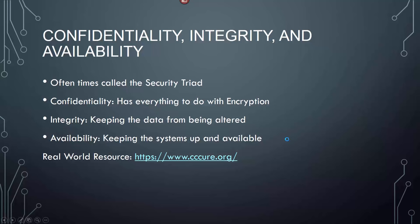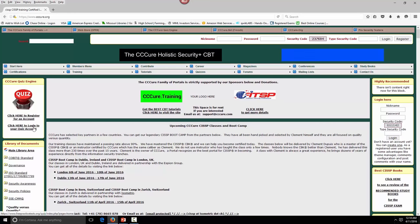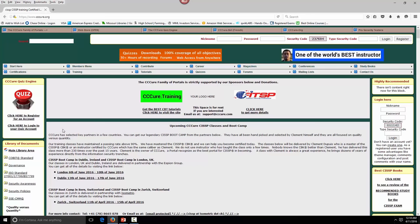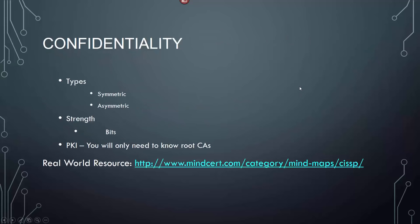CC Cure is an organization that provides CISSP training. You can sign up for test or training material — it's a very good resource. For confidentiality, there are two types: symmetric and asymmetric. Then there's the strength — how many bits encryption you have. And PKI, which is the public key encryption. You only need to know the root CAs, which provide a top-level organization for providing certificates.